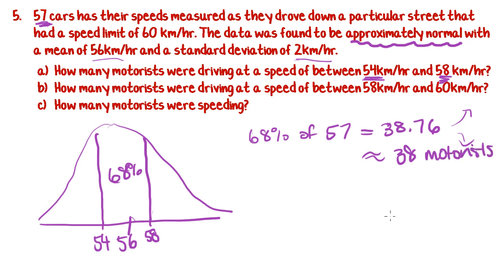That's the answer to part A. Now for part B, how many motorists were driving at a speed between 58 and 60 kilometres an hour? I'll just do this one in a different colour. So between 58 and 60. We've got standard deviations of 2, so I'm going to go another standard deviation up and I get to 60. So we're dealing with this 2 standard deviation rule, which means there are 95% in the middle.